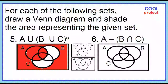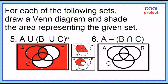Number six: A minus the quantity B intersection C. This is A. This is B intersection C. Combine A and B intersection C, then remove B intersection C. This is the result.